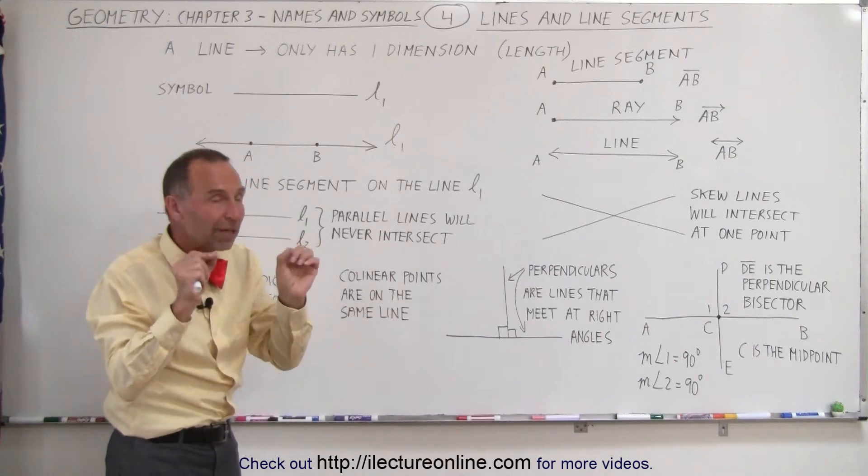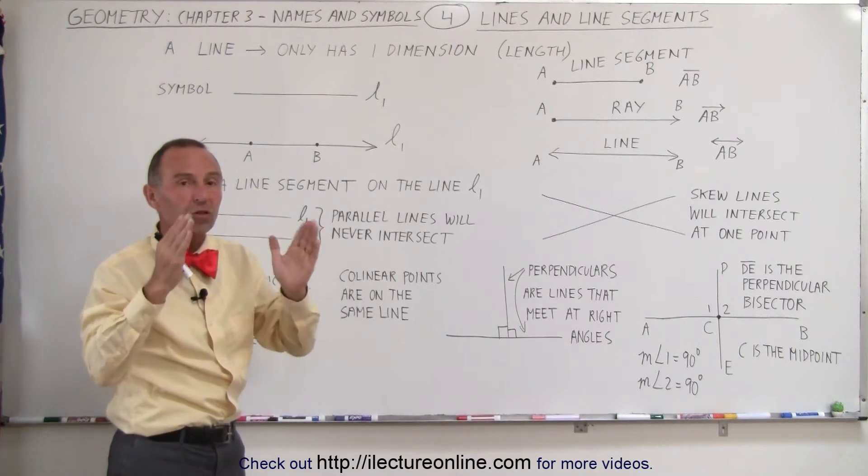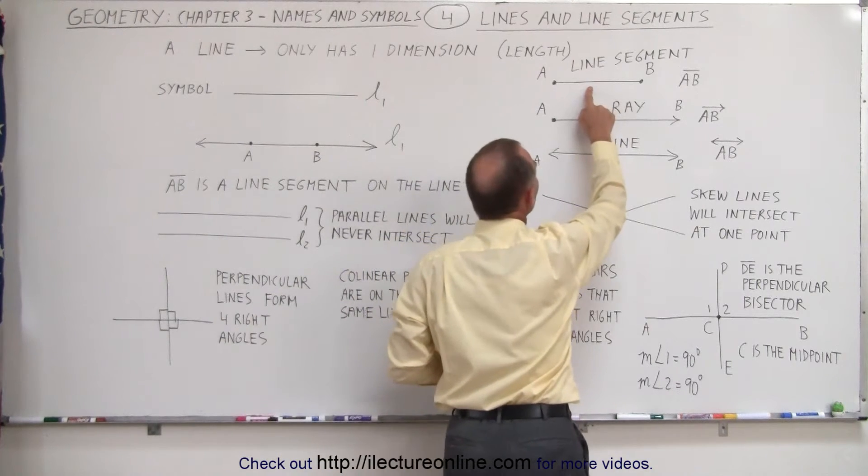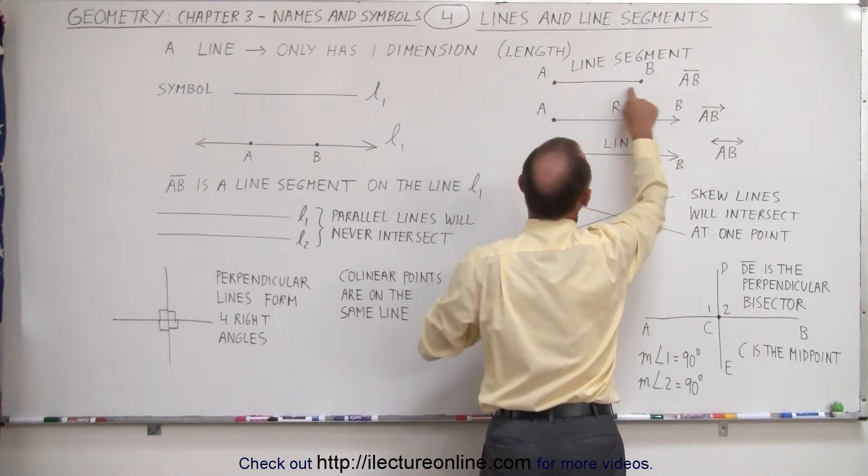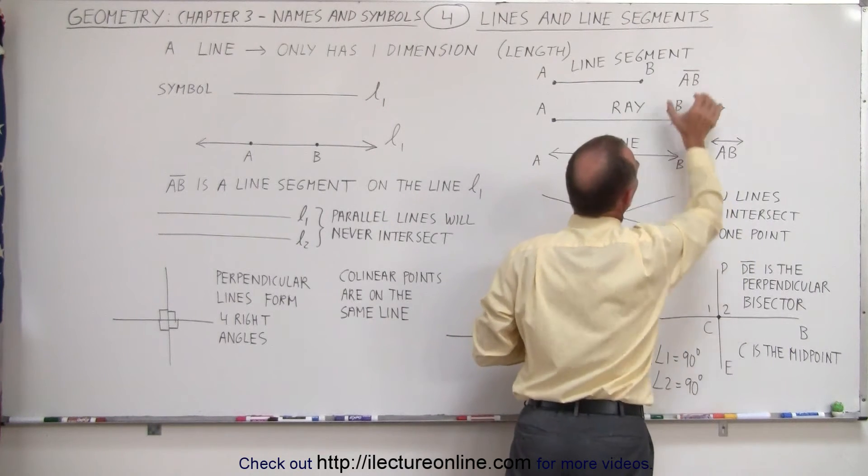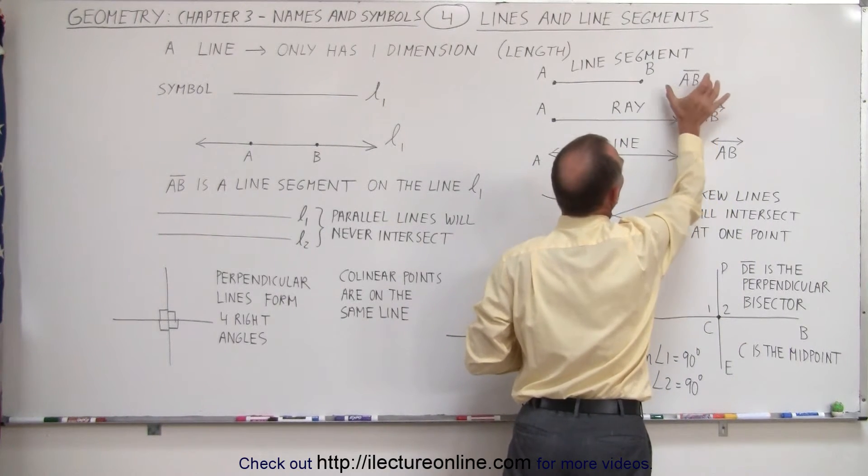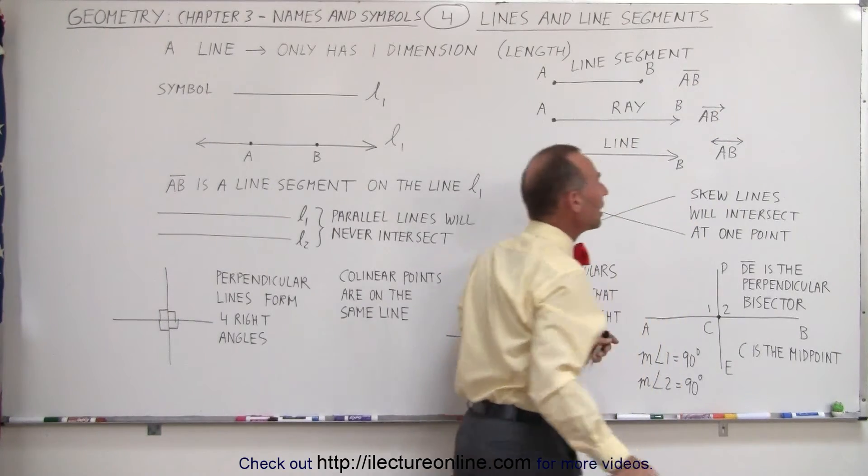But if you want to cut just a piece of that line, or annotate just a piece of that line, we call it a line segment, and we denote the start and the end point of that line segment, and we'll put a little line on top. So this symbol right here means there's a line segment starting at A and ending at B.